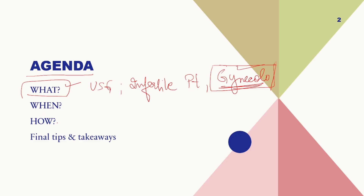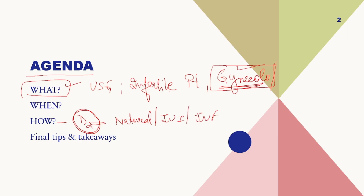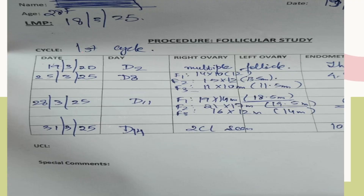How it is done: it should start on the second day of the periods. That is very important, whether you are trying naturally, by IUI, or with IVF. The follicular study ultrasound always starts from the second day itself. Some tips and takeaways I'll be discussing during the whole session.